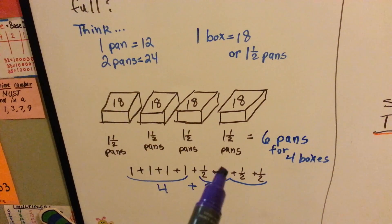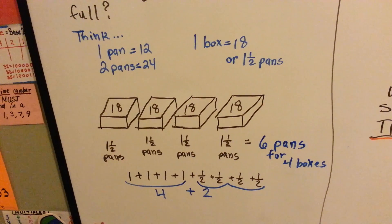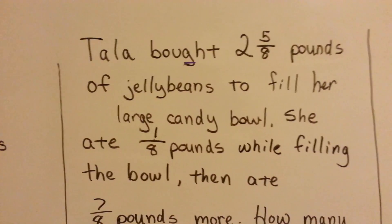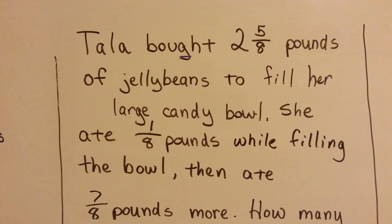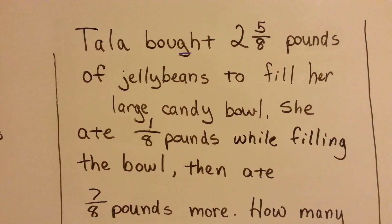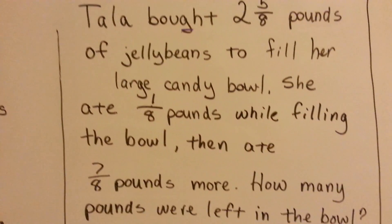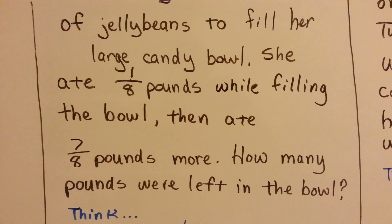2 halves make 1 whole, right? Tala bought 2 and 5 eighths pounds of jelly beans to fill her large candy bowl. She ate 1 eighth pounds while filling the bowl, then ate 7 eighths pounds more. How many pounds were left in the bowl?